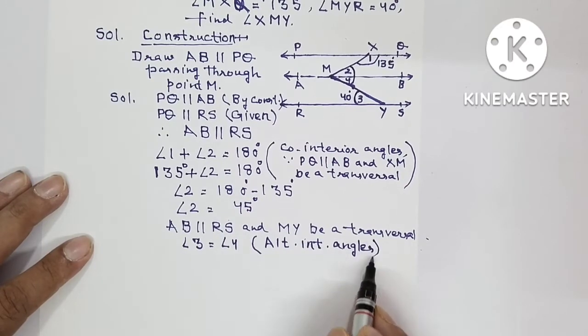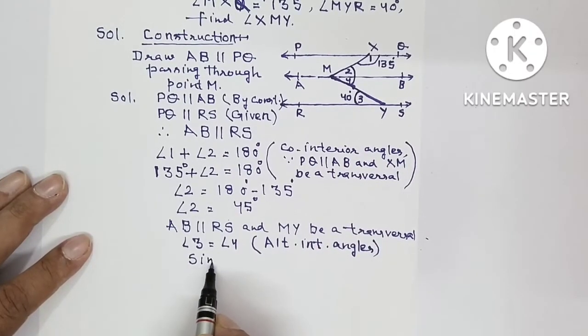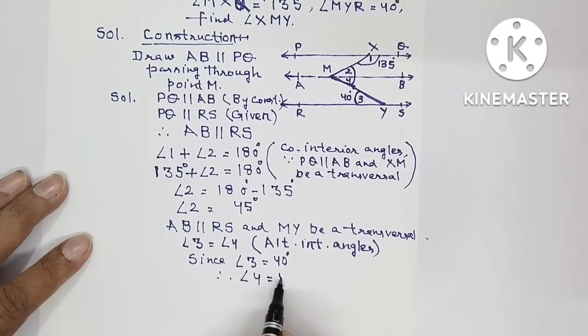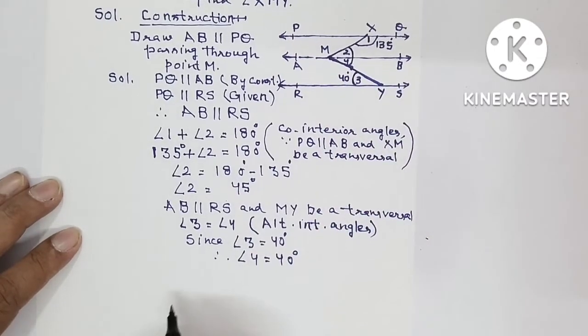Now angle 3 is 40 degrees. So we will write: since angle 3 is 40 degrees, therefore angle 4 will also be equal to 40 degrees. Now you need to find the total collective angle XMY.